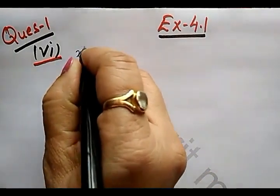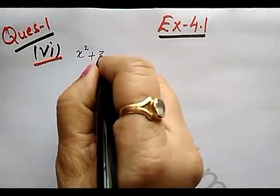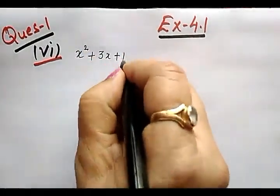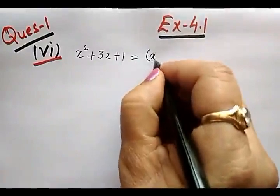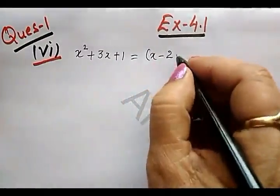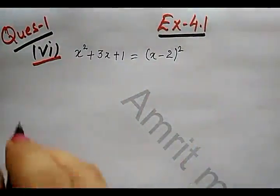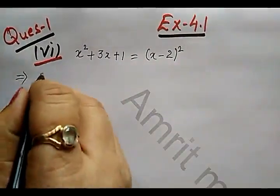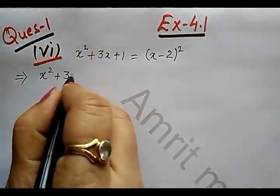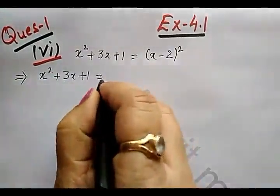Now what is the equation given to us? x squared plus 3x plus 1 equals x minus 2 whole square. So let us simplify this. On the left hand side it is x squared plus 3x plus 1 equals...